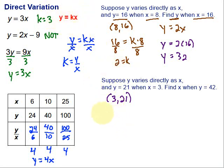So y is 21 equals k times 3. Want to solve for k? So divide by 3, divide by 3. That's an ugly 3. There we go. 7 equals k.